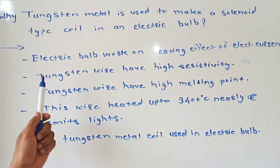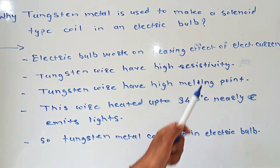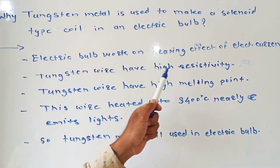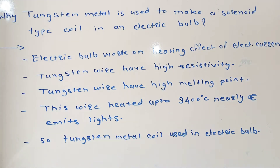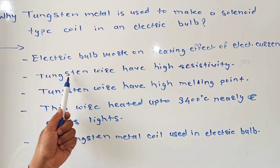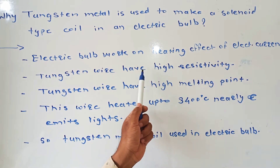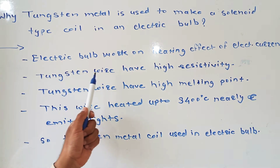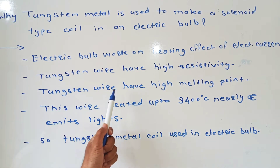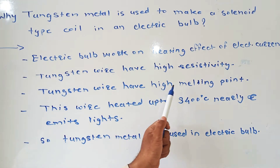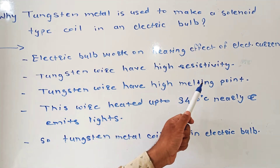The second point is: Tungsten wire has a high resistivity. The third point is: Tungsten wire has a high melting point.